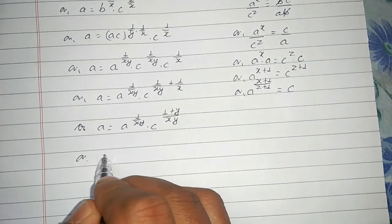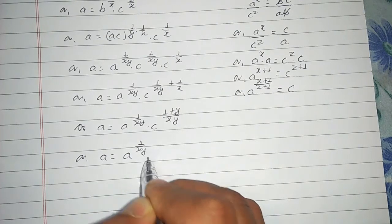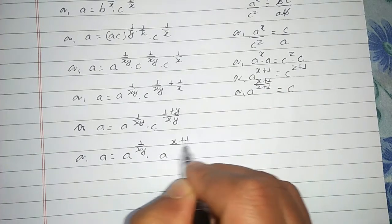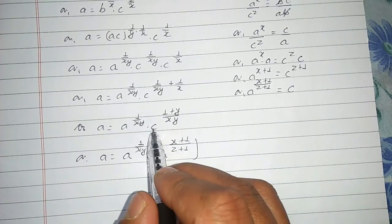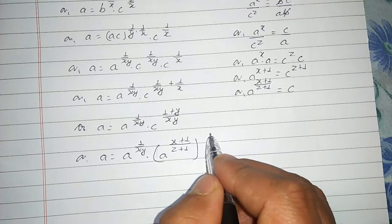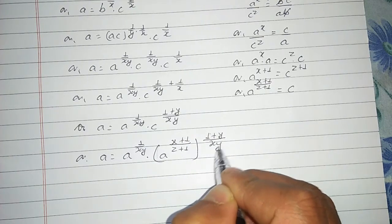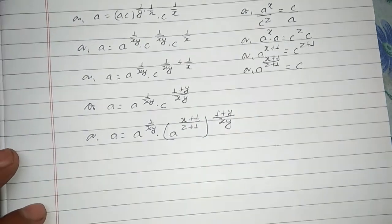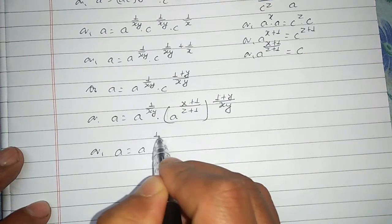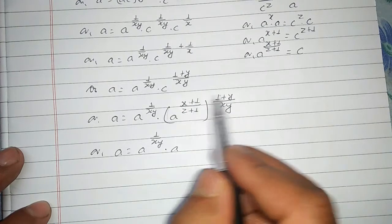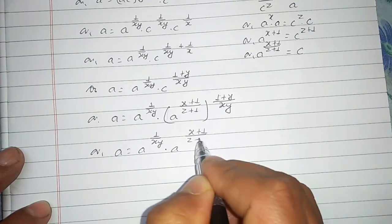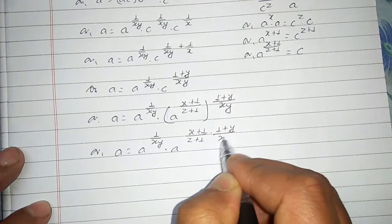Substituting the value of c back into the previous equation: a equals a to the power 1 upon xy, times c where c equals a to the power x plus 1 divided by z plus 1, and the power of c is 1 plus y divided by xy. The two exponents are added: x plus 1 divided by z plus 1, times 1 plus y divided by xy.